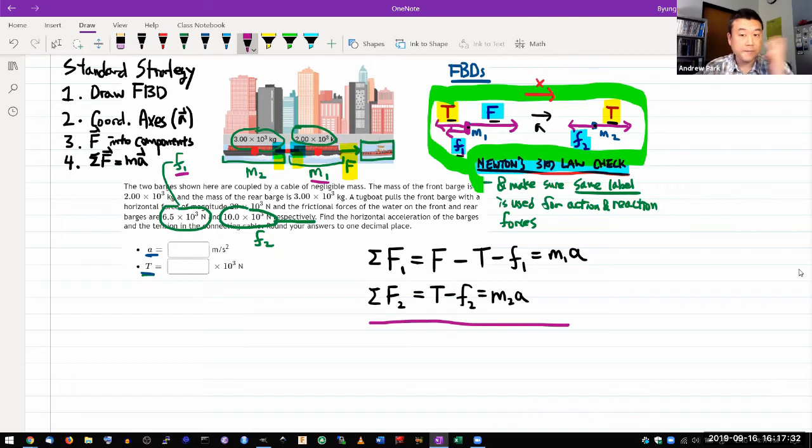Let me count my equations and my unknowns. Make sure this is solvable before we start solving them. Equation one, equation two, let's count the unknowns. Applied force known, tension unknown, friction force known, tension unknown, friction force known, mass known, acceleration unknown, and same tension, acceleration, good.